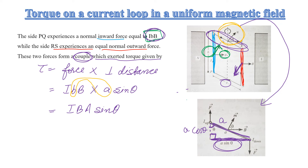Since a × b = A (area of the coil), we substitute this. The torque tau has now become clear. Tau is equal to I × B × a × sin theta. So the result is: tau = I B A sin theta.